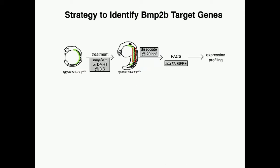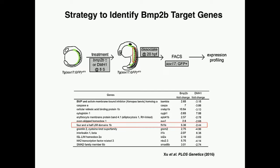However, we didn't know what downstream target genes of BMP2B signaling regulate this hepatopancreatic progenitor cell fate decision. We performed expression profiling, dissociating endodermal cells from either BMP2B overexpressing or DMH1-treated BMP-inhibited embryos. From the list of genes showing responsiveness to BMP2B signaling, one gene — Four and a Half LIM Domains 1B, FHL1B — showed very profound responsiveness to BMP2B signaling, and its function was largely unknown.